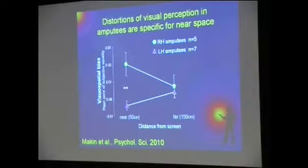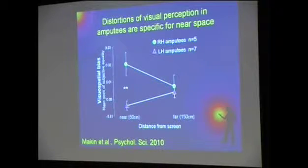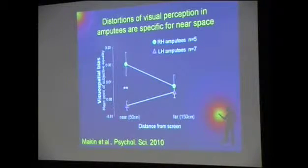In fact, both amputees performed more accurately. This result shows us that we can find some distortions in visual perception following amputation, but they are specific to near space — to action space. This experiment, as I mentioned, is behavioural: I asked them to generate responses to stimuli that I'm presenting to them.